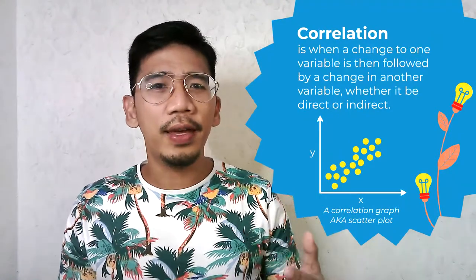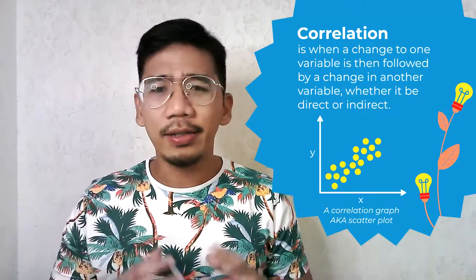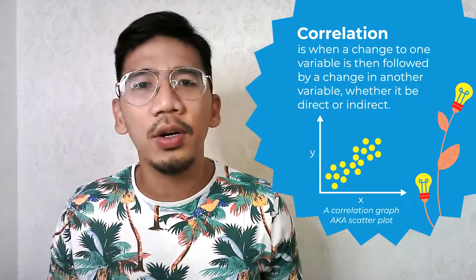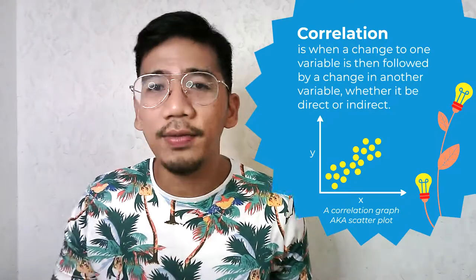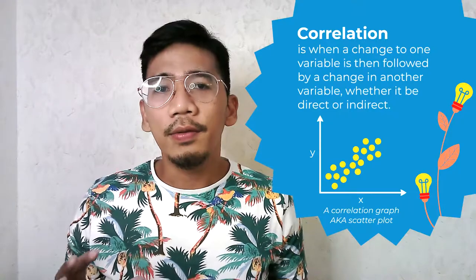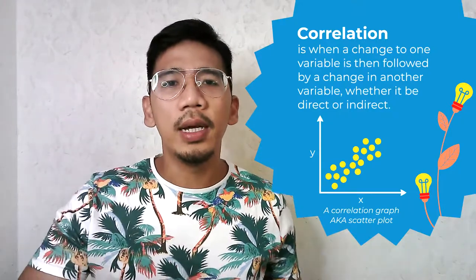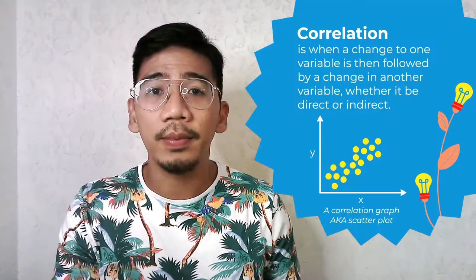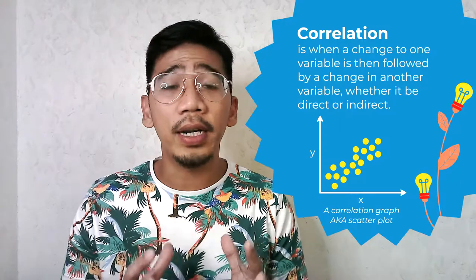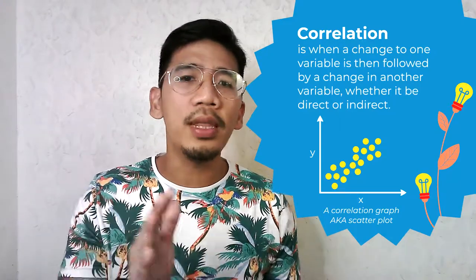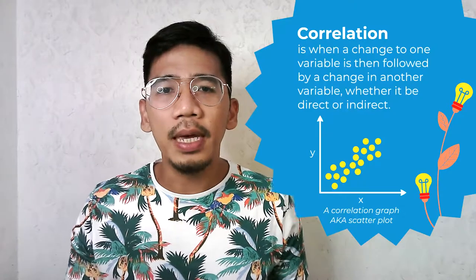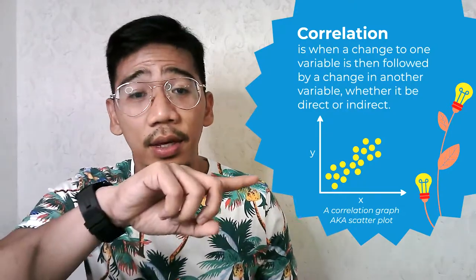When it comes to correlation, think of it as the combination of the words: 'co' meaning together, and 'relation' meaning a connection between two quantities. Correlation is when a change to one variable is then followed by a change in another variable, whether it be direct or indirect. Variables are considered uncorrelated when a change in one does not affect the other. In short, it measures the relationship between two variables. The changes between variables X and Y can be considered positive or negative.